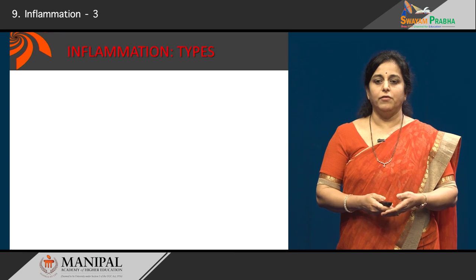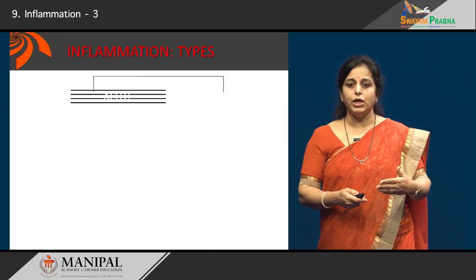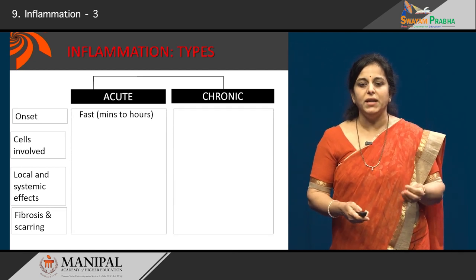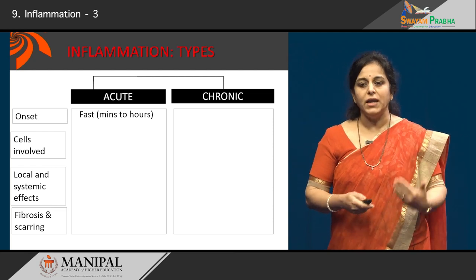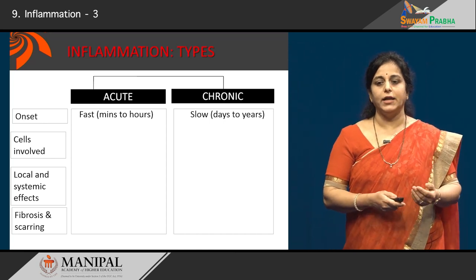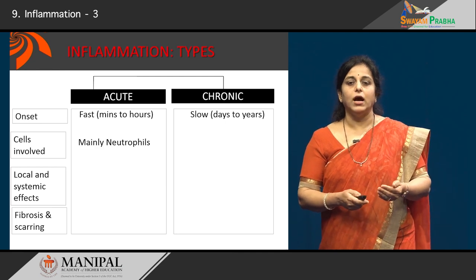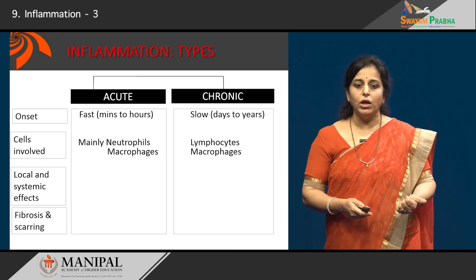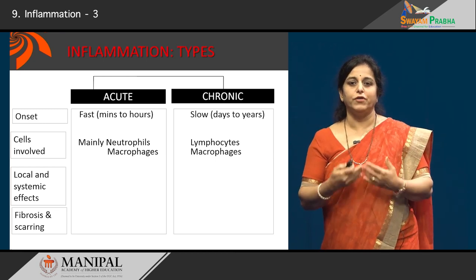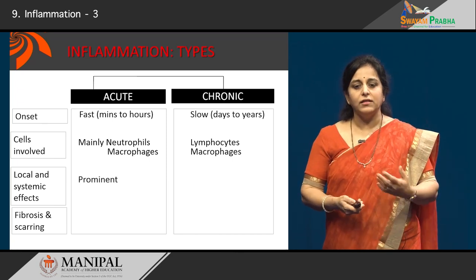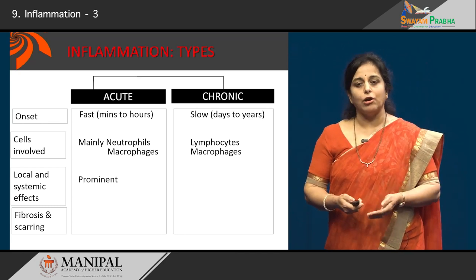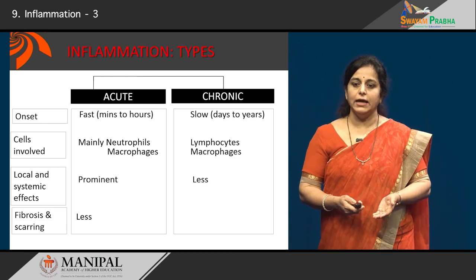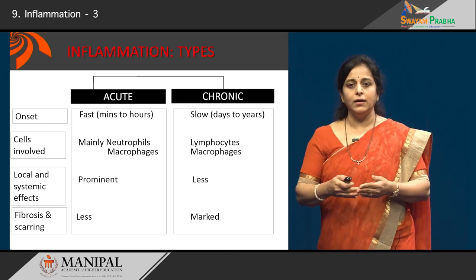What are the types of inflammation? There are two important types: acute and chronic. Acute inflammation is of very short duration, occurring within minutes to hours, whereas chronic inflammation occurs over many days to months. In acute inflammation, the most important cells involved are neutrophils and macrophages, while in chronic inflammation we have lymphocytes and macrophages. Fever and other systemic signs are prominent in acute inflammation, while fibrosis and scarring are features more characteristic of chronic inflammation.